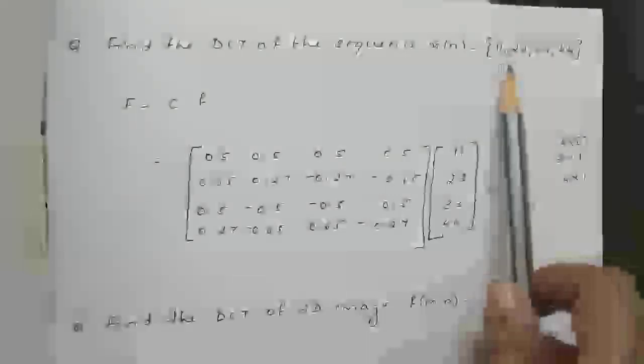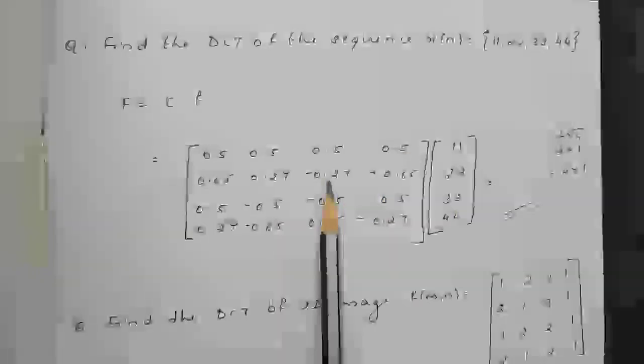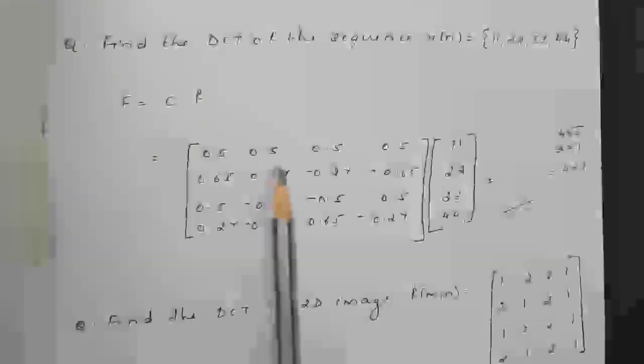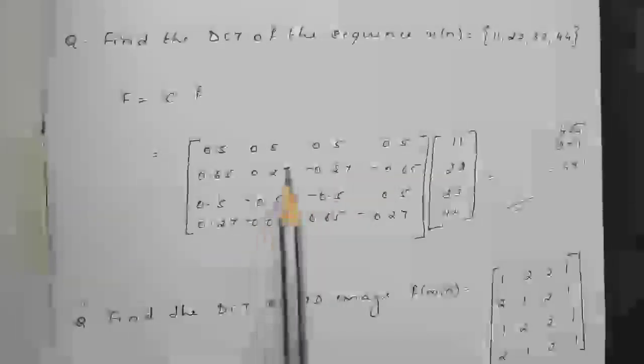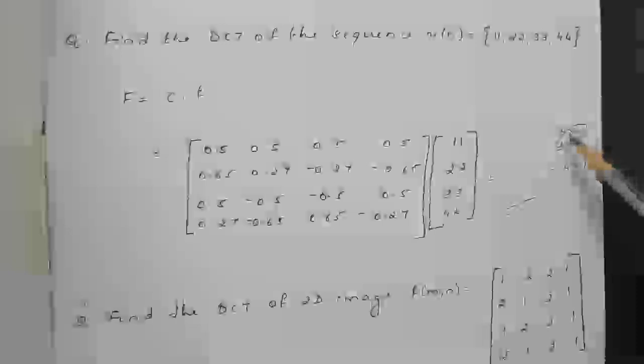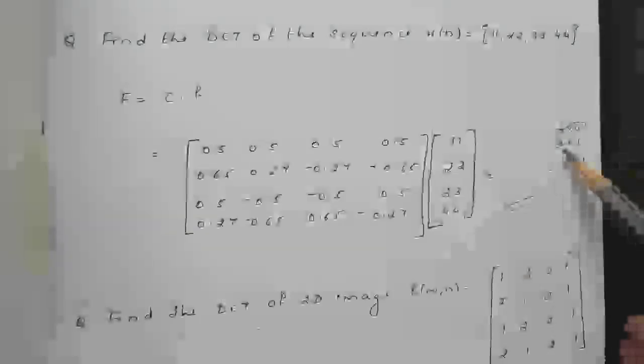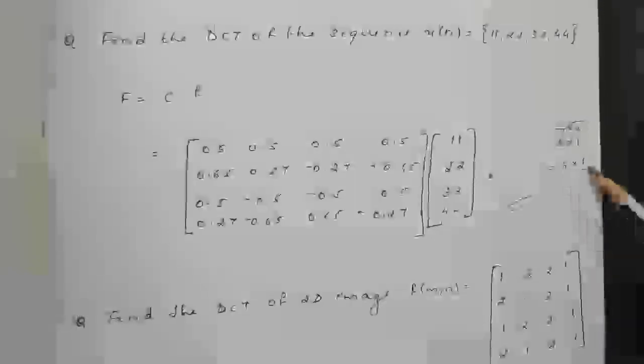Now we look at problems. Find the DCT of the sequence x(n) = {11, 22, 33, 44} — a KTU university question from April 2018. It is a one-dimensional signal, so the equation is F = C × f. For N = 4, the C matrix has first and third rows of all 0.5, second row 0.65, 0.27, 0.27, 0.65, and the last row is the second row with elements interchanged and sign changes applied. The input f is a 4×1 column vector, so the result is also 4×1.